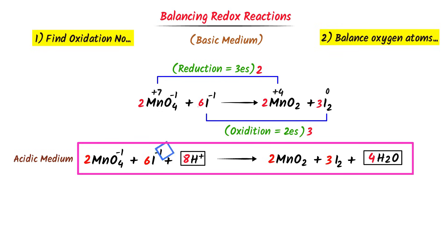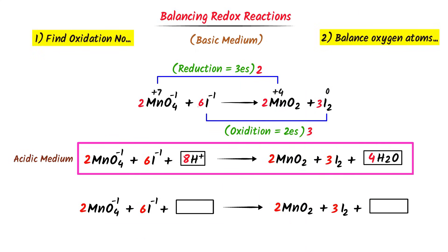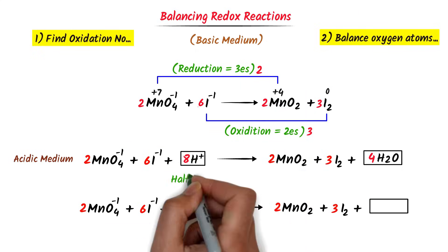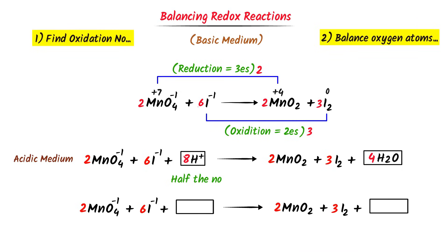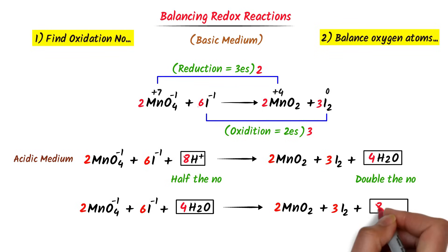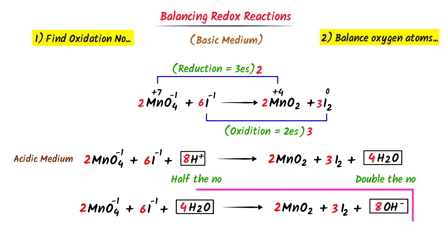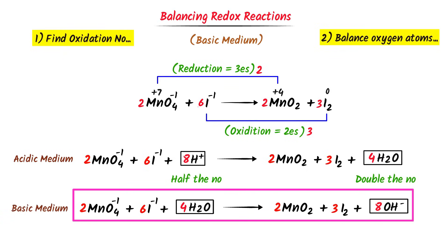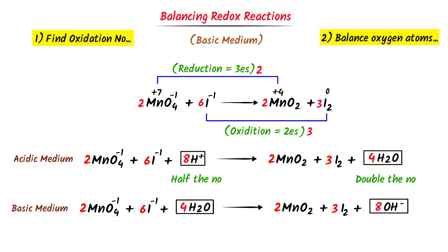But we need this reaction in basic medium. To convert from acidic to basic medium, the easy trick is: half the number of hydrogen ions and replace them with water molecules, while doubling the number of water molecules and replacing them with hydroxide ions. So this gives the balanced redox reaction in basic medium. The logic is: we half the hydrogen ions because we are forming water molecules (forming new bonds), while we double the water molecules because we are breaking them to form hydroxide ions.